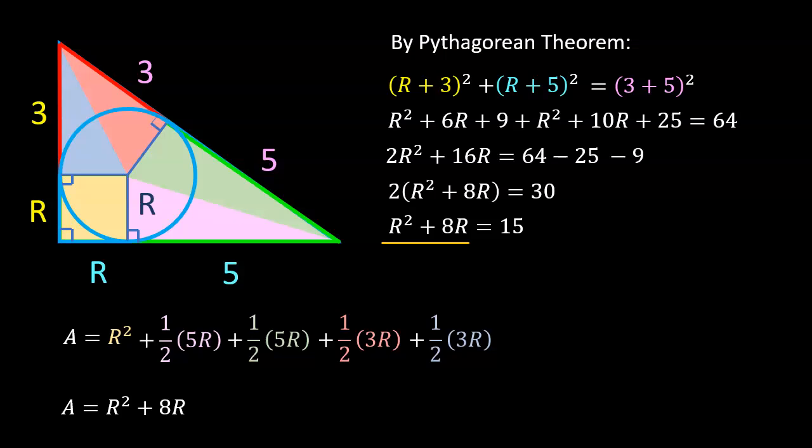Notice that this is equal to the area of the triangle in our first equation. Therefore, area of the triangle equals 15 square units.